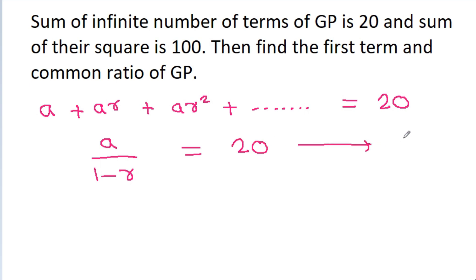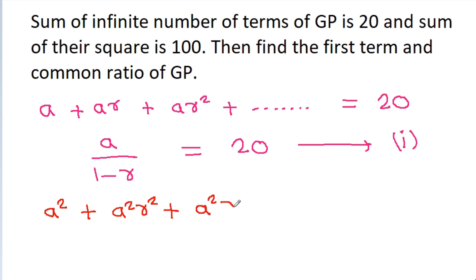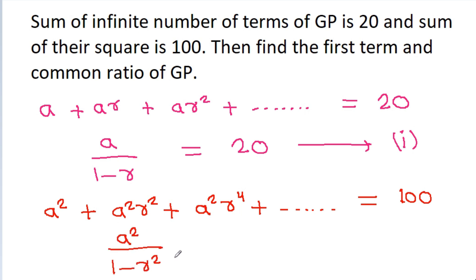The squares of the GP terms become a², a²r², a²r⁴, ... up to infinite terms, which equals 100. The sum of this infinite series is a²/(1-r²), which equals 100. Suppose this is equation 2.